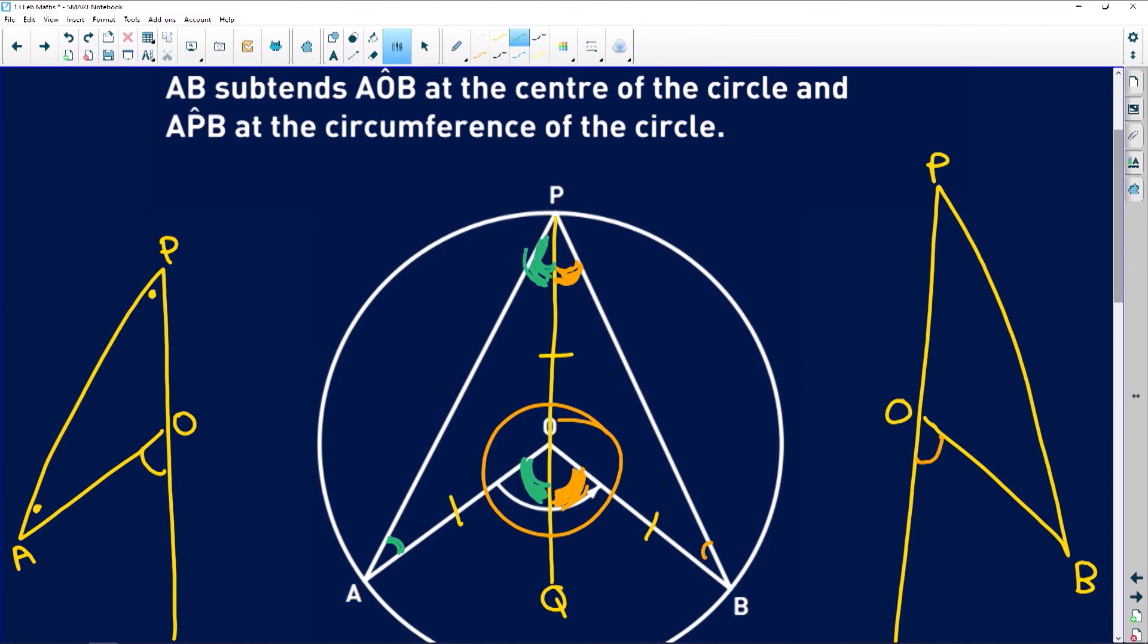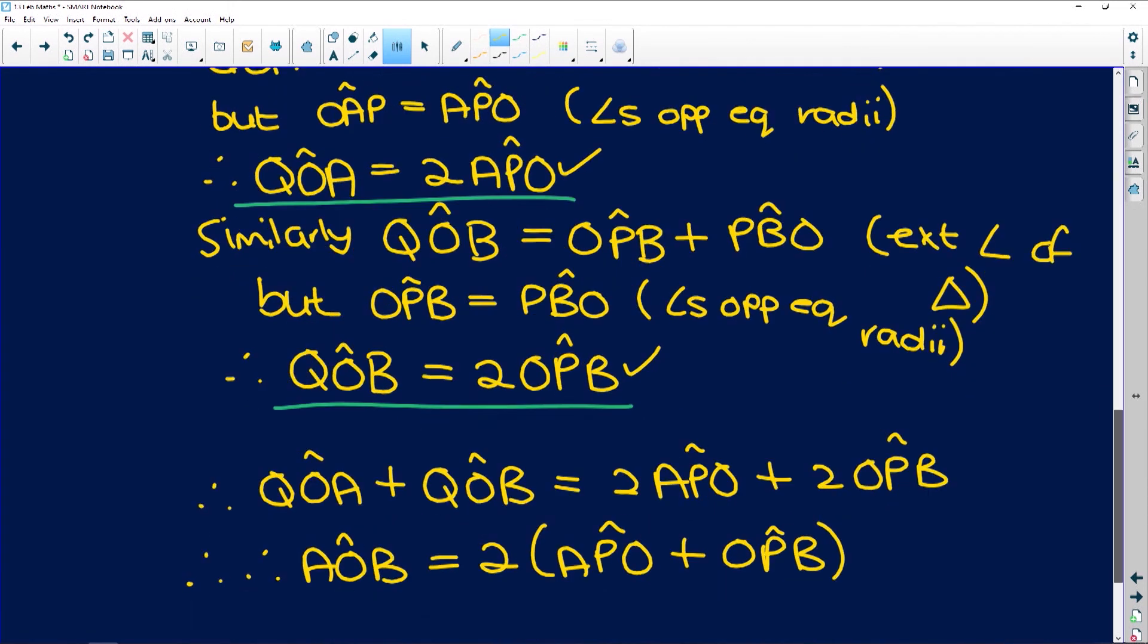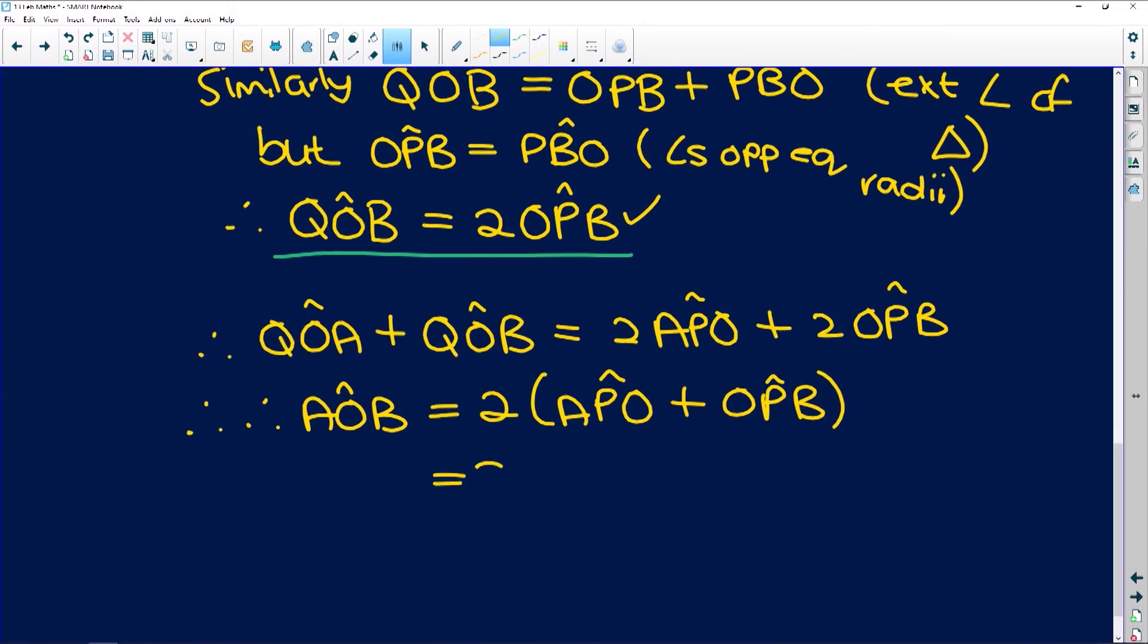Now if you look over here, AOB is equal to 2 times APO plus OPB. If I add them together, I get that whole angle at the circumference, which is that APB. Equal to 2 times angle APB.